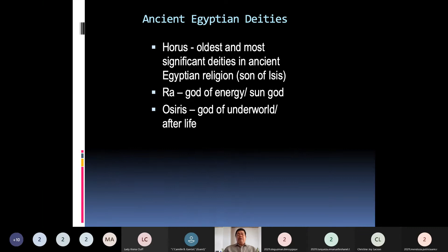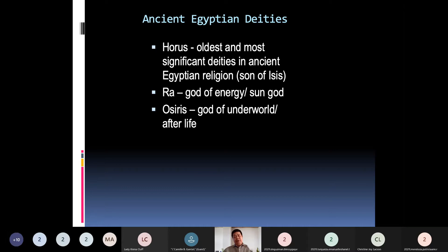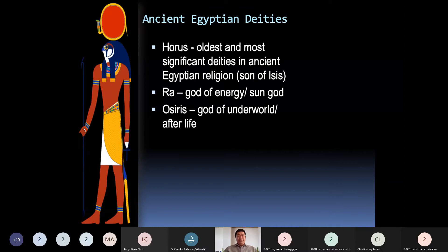Most Egyptian art, particularly sculpture, reflected their religious beliefs. Among their gods, they had Horus — the oldest and most significant deity, son of Isis. They also believed in Ra, the god of the sun, and Osiris, the god of the underworld and the afterlife. There is a god who dwells in heaven and a god who dwells in the underworld — an example being Horus.